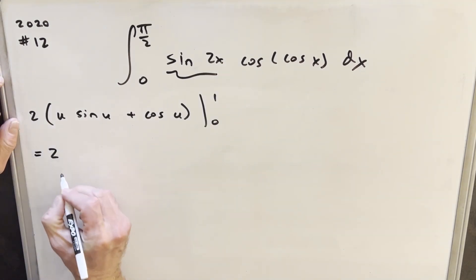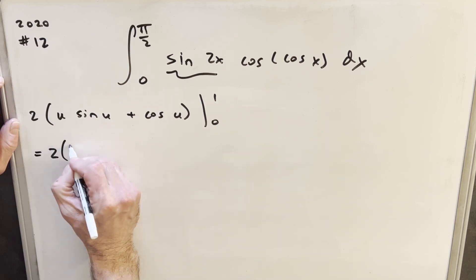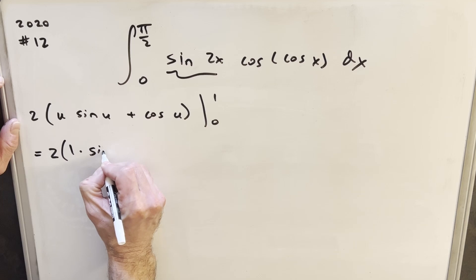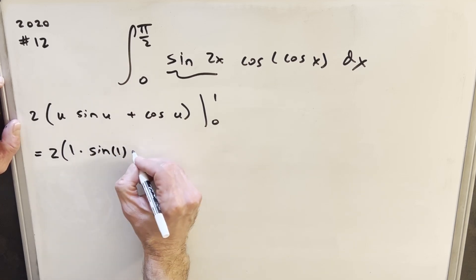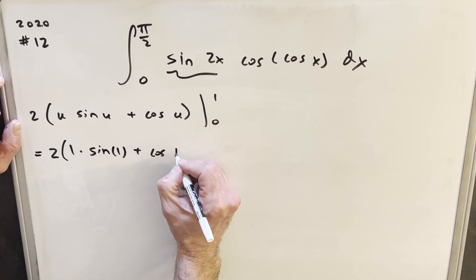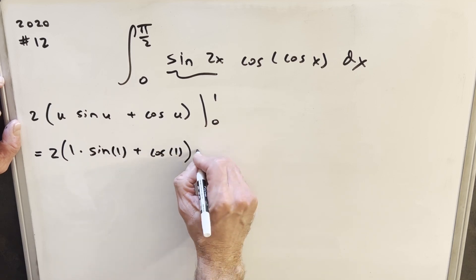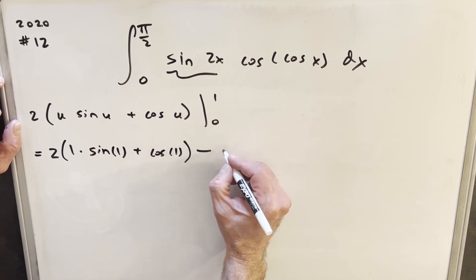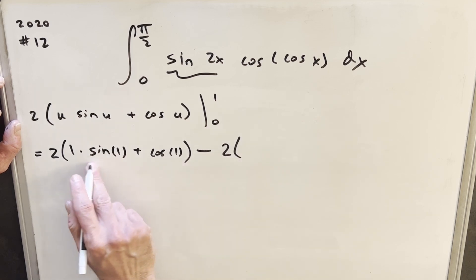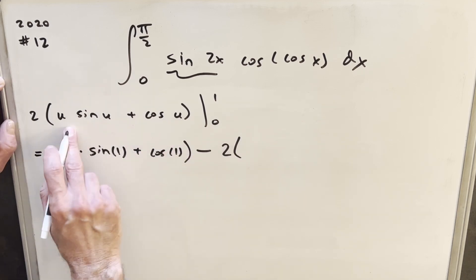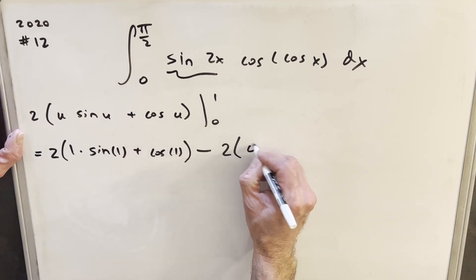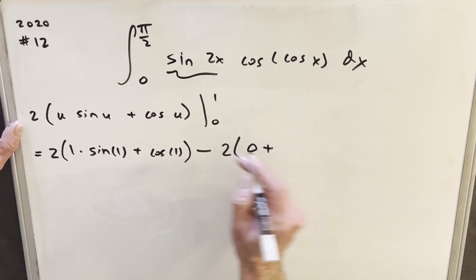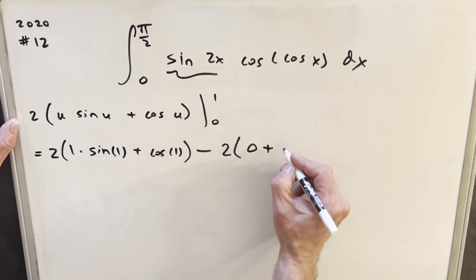Okay, now I'm ready to evaluate. So we'll have our two out front. Then we'll be plugging in a 1. So I'm going to have, we'll just leave a 1 here, sine of 1. You don't see that very often. There's sine of 1 plus cosine of 1. Then we're going to do minus 2. Now we plug in, we plug a 0 in here. When we plug a 0 in for u, we get 0 times sine of u, 0. So this first piece is just a 0. Plus cosine at 0 is just going to be 1.